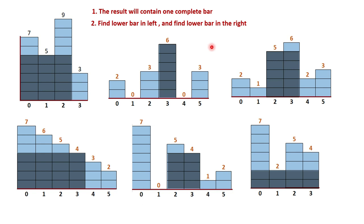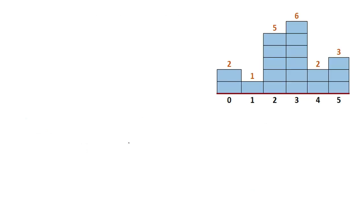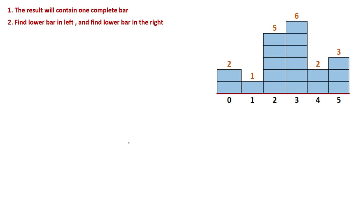Once we have the left and right limits, the area formula is: (right minus left plus 1) into bar height. In this case right is 3, left is 2, so (3 - 2 + 1) = 2, multiplied by height 5 gives area 10. So the result will always contain a complete bar, we find the lower left and right boundaries, calculate area for each bar, compare all areas, and declare the highest.